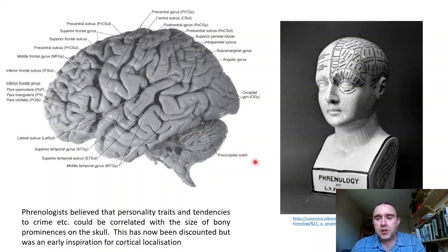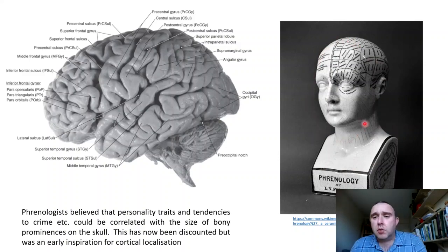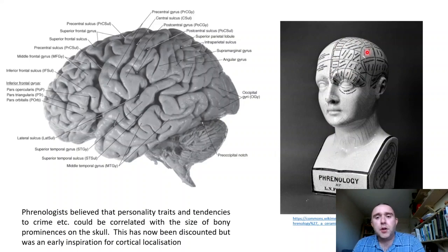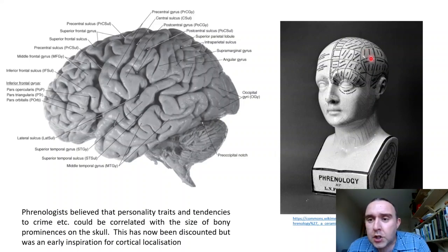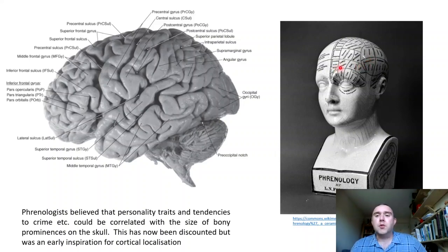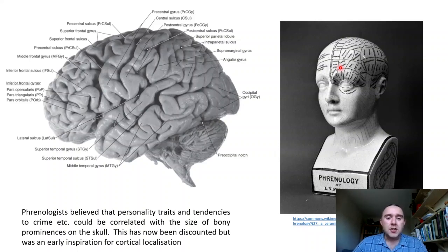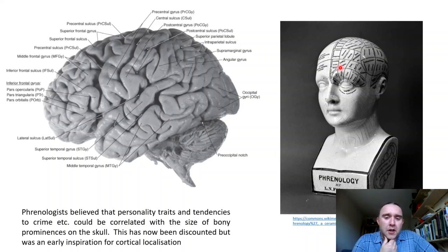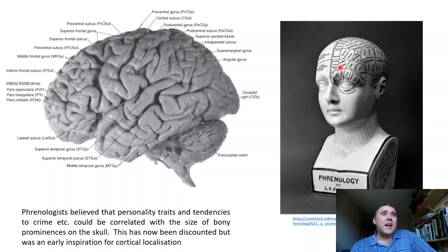These were the phrenologists. On the right-hand side we have an example of a phrenological model. Basically, what the phrenologists thought was that the size of various lumps and bumps on the surface of the head correlated with various personality traits, and even with tendencies to criminality. They turned it into an art form whereby they would feel people's heads, measure the sizes of these protuberances, and correlate them with personality traits. This pseudoscience has been discredited many times since its inception. However, we now know that they were onto something.